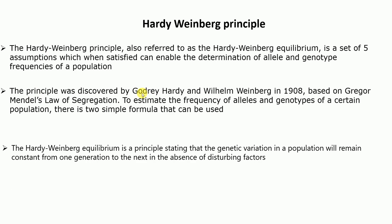The principle was discovered by Hardy and Wilhelm Weinberg in 1908, based on Gregor Mendel's law of segregation. This principle is used to determine the frequency of alleles and genotypes of a certain population. There are two simple formulas that can be used to determine these allele and genotype frequencies. Hardy-Weinberg equilibrium states that the genetic variation in a population will remain constant from one generation to the next in the absence of disturbing factors.